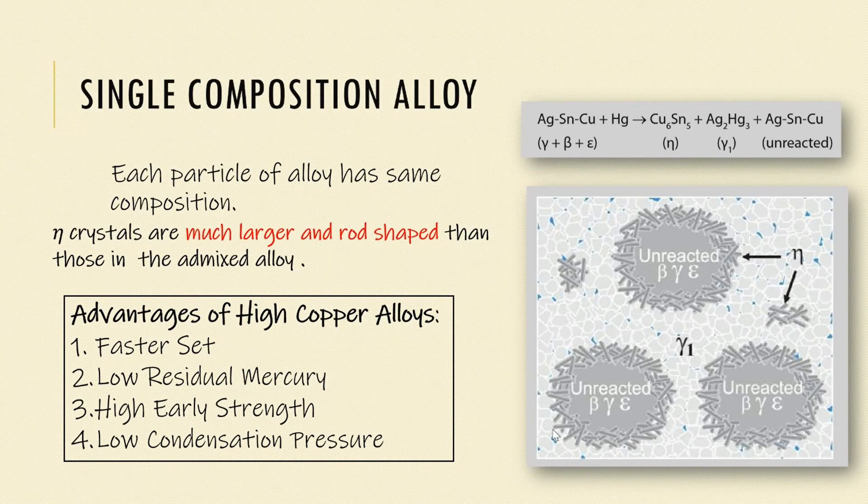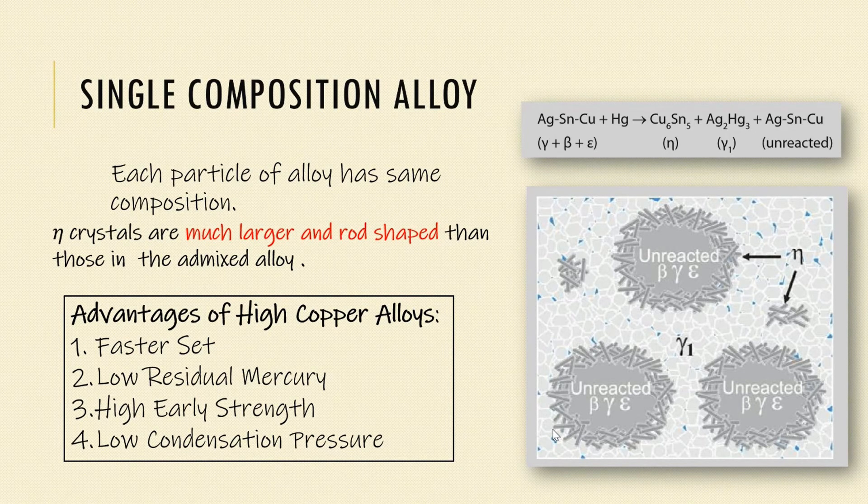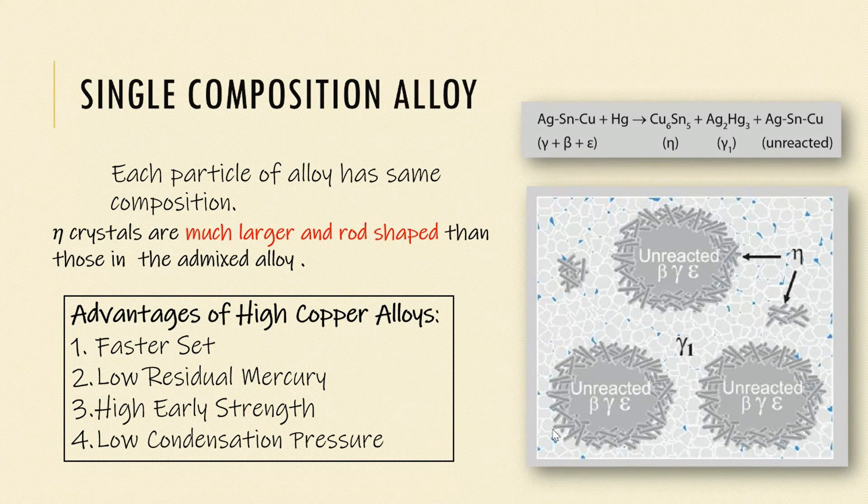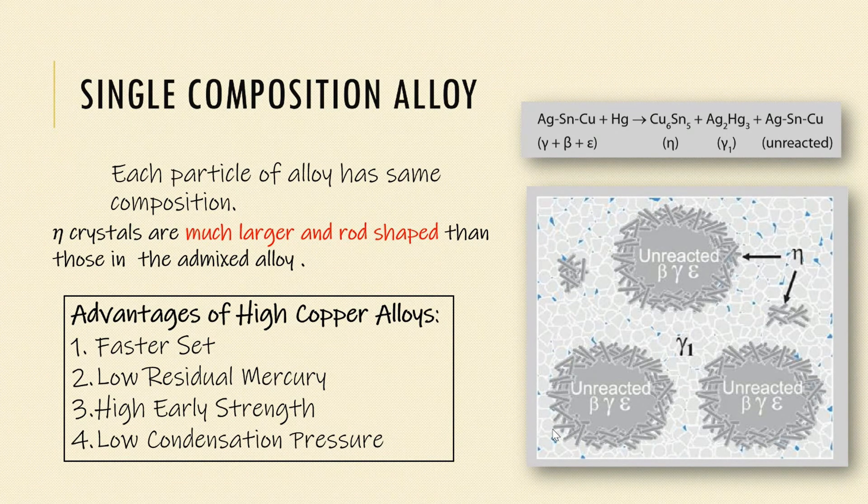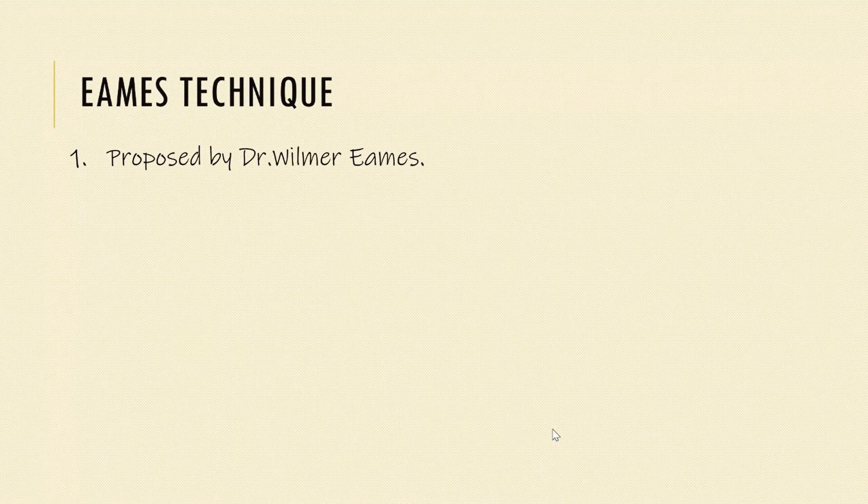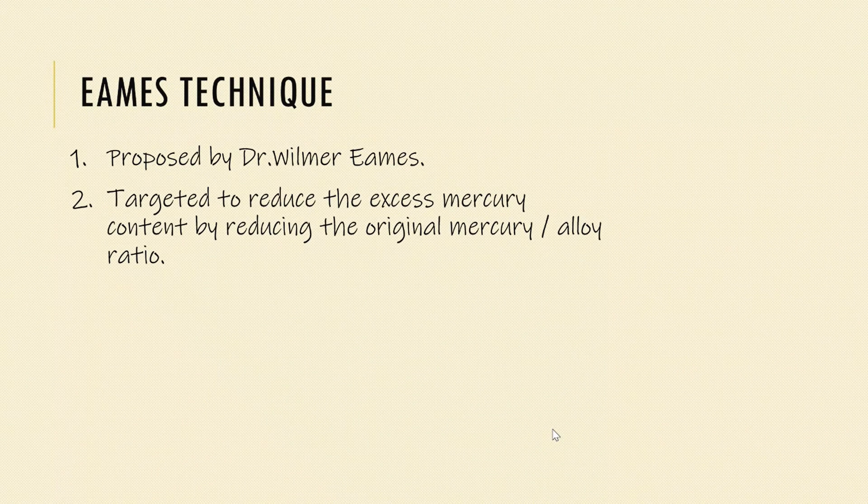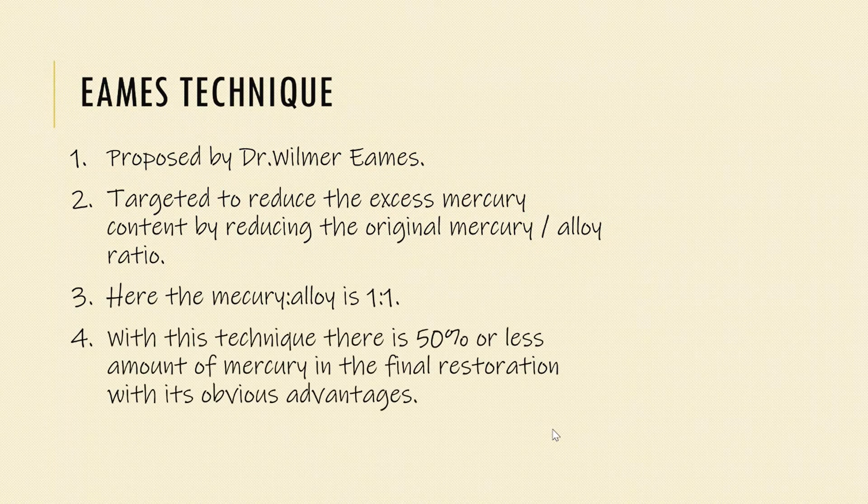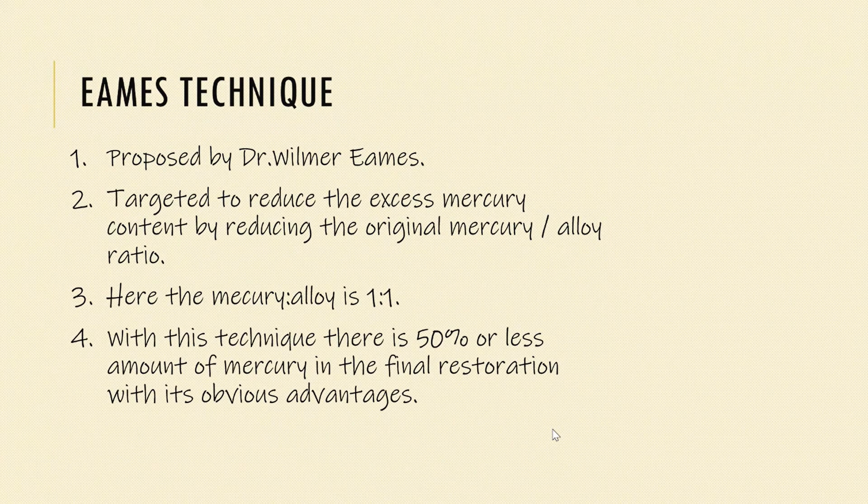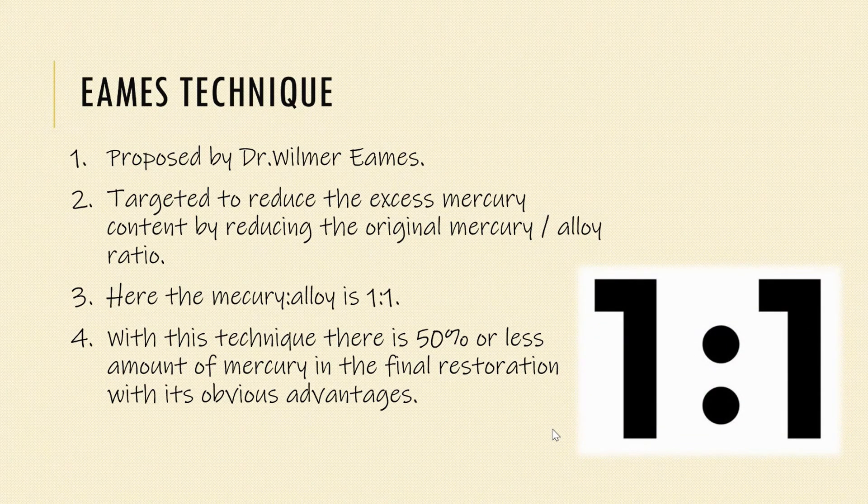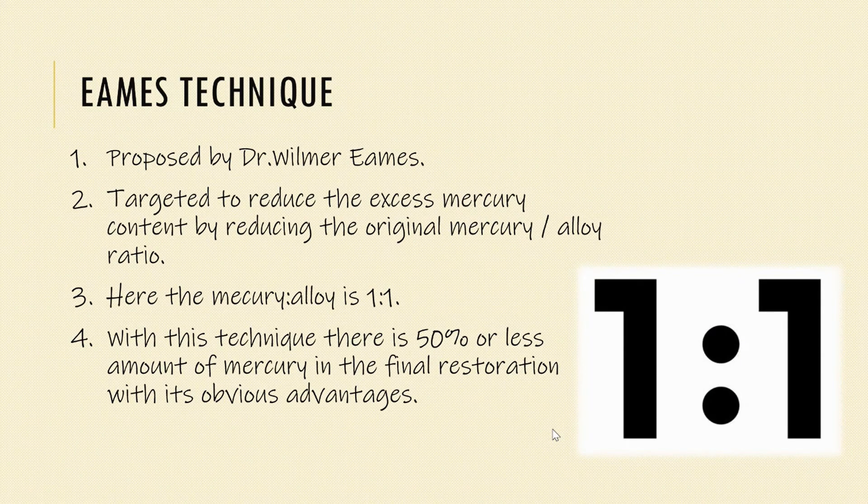This is about the setting reactions of silver amalgam alloys. Make sure you give it another reading after watching this video so that you'll have a better and clear picture. Let us now learn about the Eames technique. It was proposed by Dr. Wilmer Eames and is targeted to reduce the excess mercury content by reducing the original mercury to alloy ratio. Here, the mercury to alloy ratio is 1 to 1. With this technique, there is 50% or less amount of mercury in the final restoration with its obvious advantages.